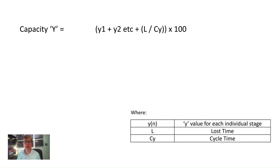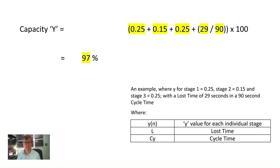We then use the small y values to calculate the overall large Y value: each stage's small y is added together, then the overall lost time divided by cycle time is added, and the result multiplied by 100 to get a percentage. In this example, y for stage 1 = 0.25, stage 2 = 0.15, stage 3 = 0.25, with lost time of 29 seconds in a 90-second cycle, gives a Y value of 97%. Although under 100%, the practical reserve capacity should be capped at no more than 90%, so this example should be reassessed. Figures higher than 90% indicate a lack of capacity in the proposed signals.